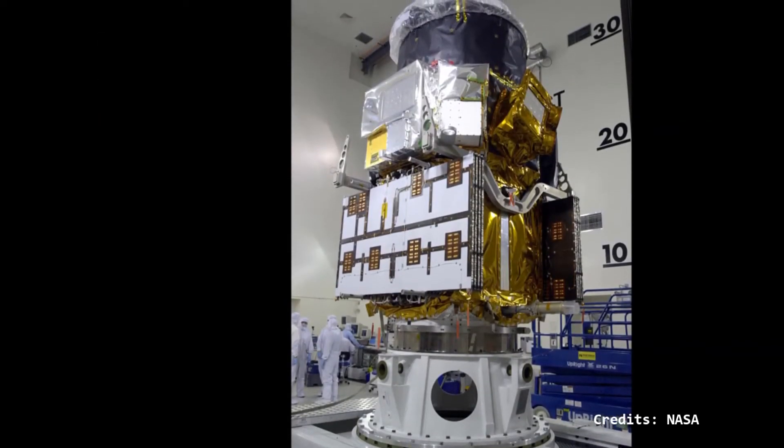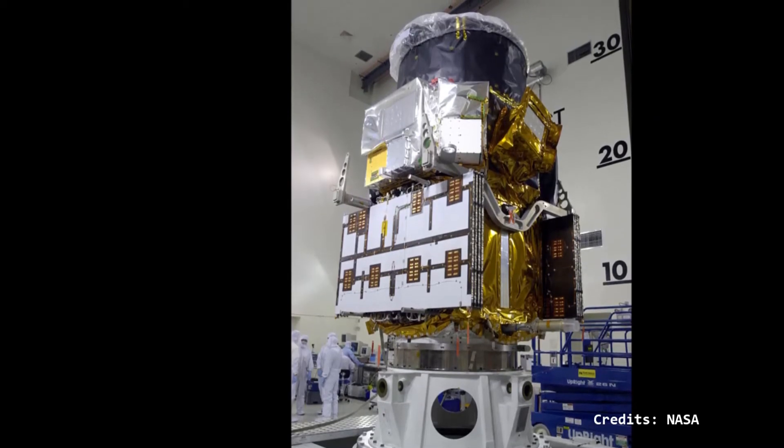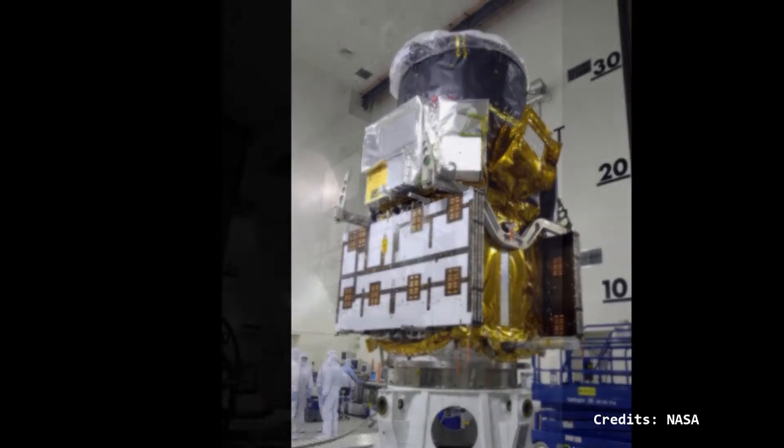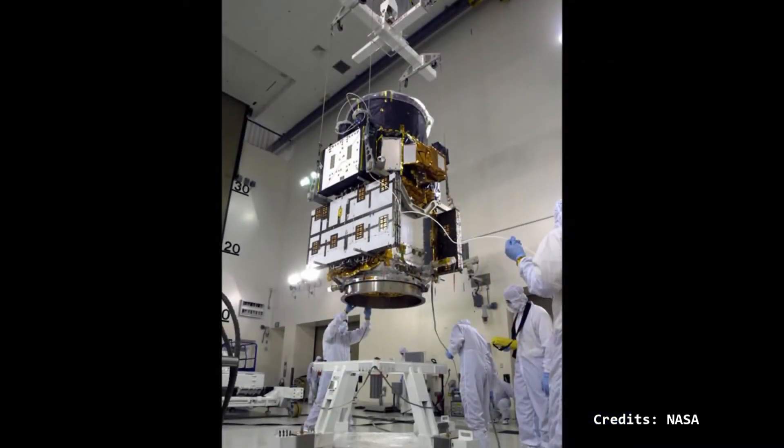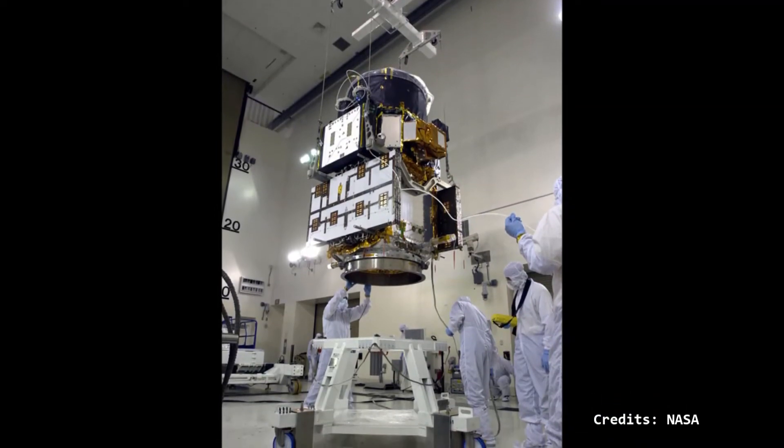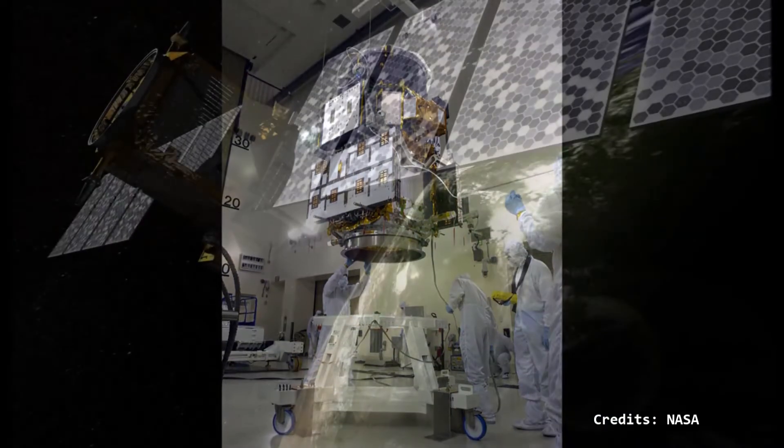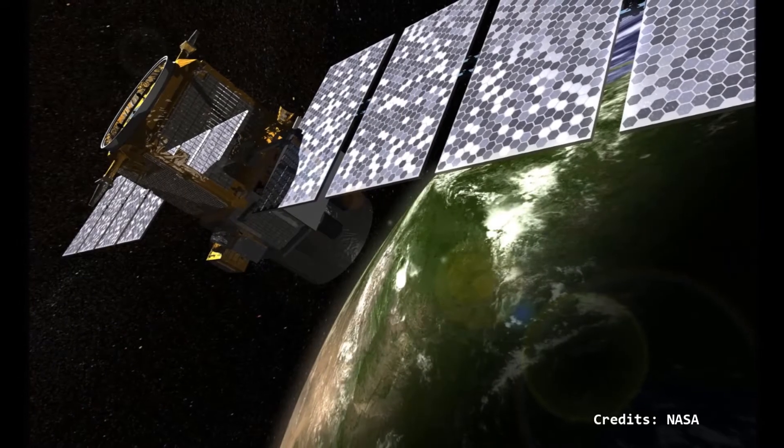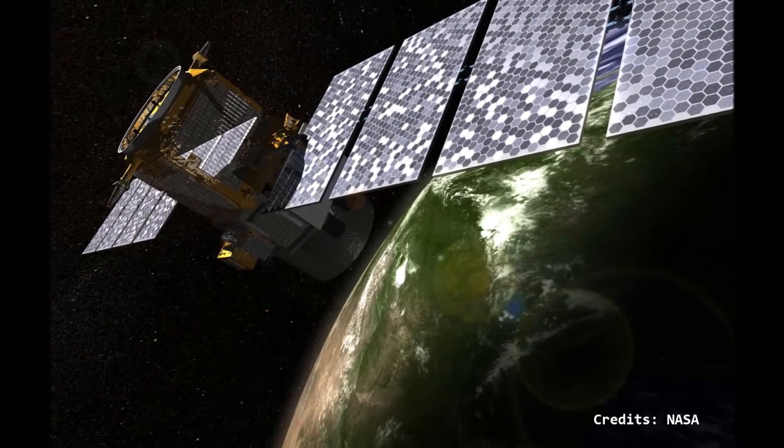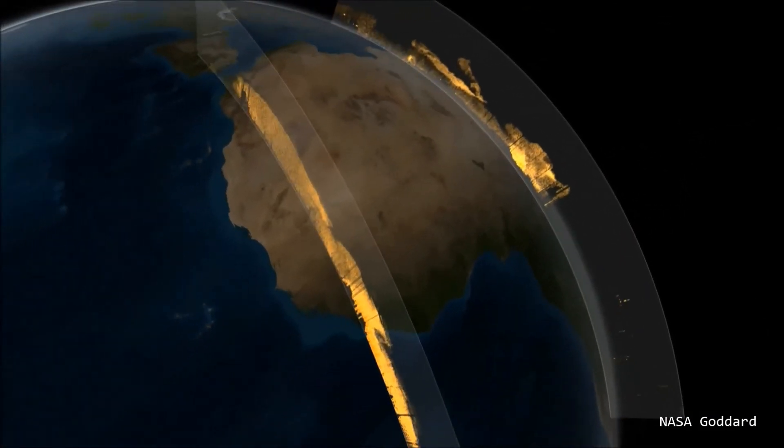The Calypso Satellite, short for Cloud Aerosol Lidar and Infrared Pathfinder Satellite Observations, provides new insight into the role that clouds and atmospheric airborne particles play in regulating the Earth's weather, climate, and air quality. The satellite is equipped with three nadir-viewing instruments, one of which is called the Cloud Aerosol Lidar with Orthogonal Polarization, or Caliop.